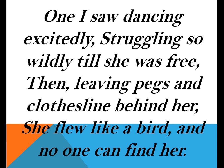The poetess notices one of the clothes dancing so excitedly and trying hard to free herself from the pegs, which are used to secure the clothes on the clothes line so that they may not fall down. Suddenly the cloth was able to free herself and flew off like a bird, leaving the pegs and the clothes line behind her. Alas, no one could find her.